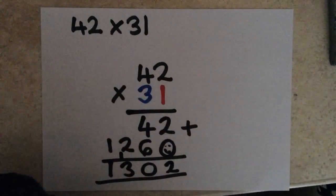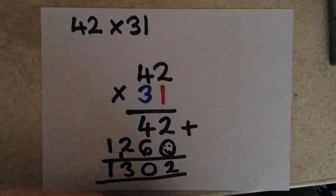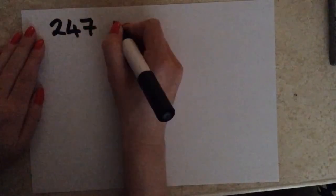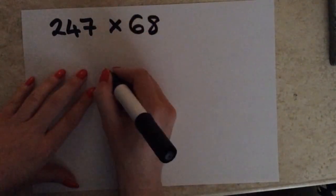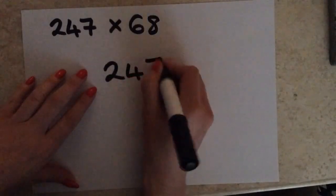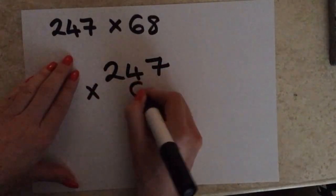Okay, my final example is a three-digit number multiplied by a two-digit number. And for a GCSE exam, this is as big as it will go. Basically, because they won't give you a number bigger than that, because it would just take up too much exam time. So, I'm going to multiply 247 by 68. So, again, we just write this down, lined up, by 68. So, my units are lined up, my tens are lined up.